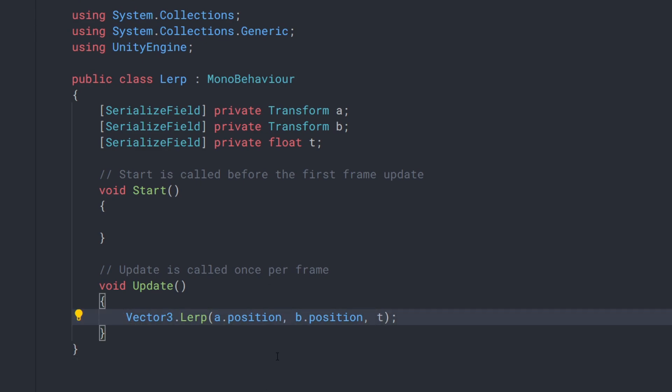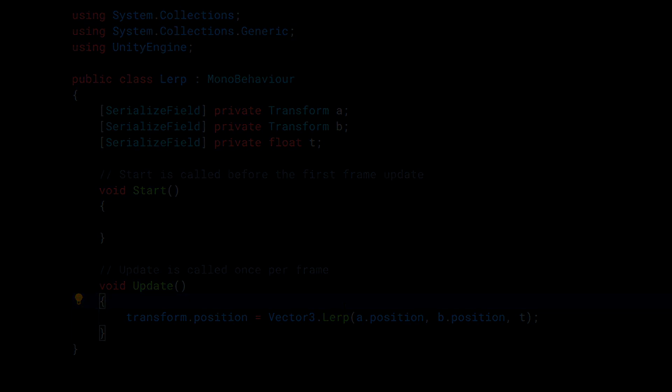Since this function returns a vector3, which is the point somewhere between A and B, let's assign this value to transform.position. This way, whatever object this script is attached to, it will have its position set to the result of the LERP.